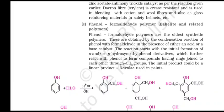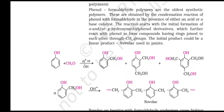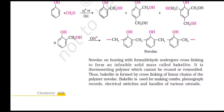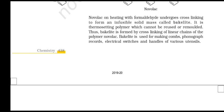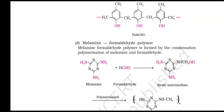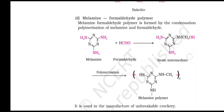Phenol-formaldehyde polymer (Bakelite and related polymers): phenol-formaldehyde polymers are the oldest synthetic polymers. These are obtained by the condensation reaction of phenol with formaldehyde in the presence of either an acid or a base catalyst. The reaction starts with the initial formation of ortho and para hydroxymethyl phenol derivatives, which further react with phenol to form compounds having rings joined to each other through –CH₂– groups. The initial product can be a linear product called novolac, used in paints. Novolac on heating with formaldehyde undergoes cross-linking to form an infusible solid mass called Bakelite. It is a thermosetting polymer which cannot be reused or remolded. Bakelite is used for making combs, phonograph records, electrical switches and handles of various utensils.